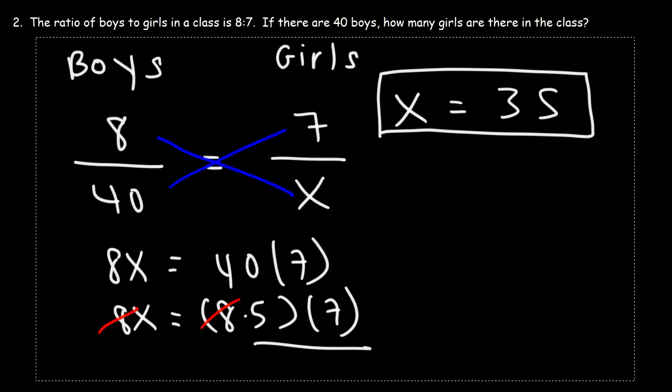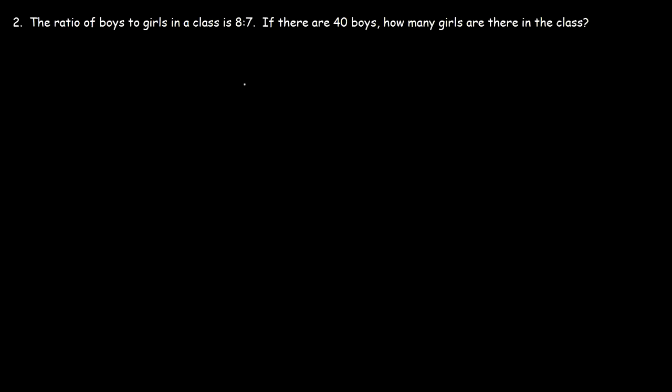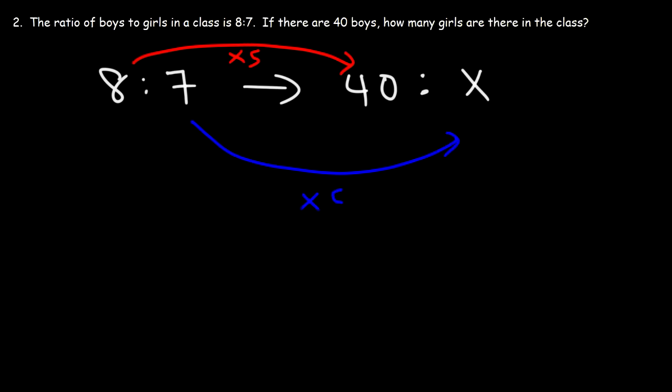And you can think about it conceptually. So let's say we have the ratio 8 to 7, and we want to expand it to 40 to some unknown number. To go from 8 to 40, we need to multiply by 5. So therefore, to keep the ratio the same, we need to multiply by 5, which will give us 35. And that's a quick way to get the answer mentally if you see it that way.